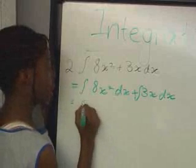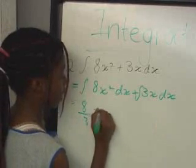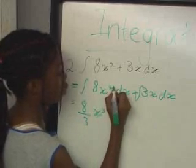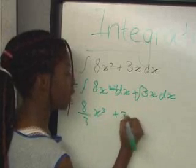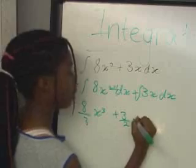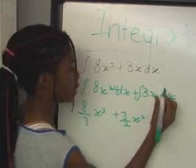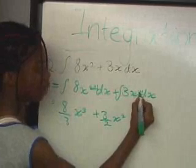That equals 8 over 3 x cubed, because you add 1 to that. Then you add that to 3 over 2 x squared, because this is just the same as a 1 there, and you add a 1 to make 2.